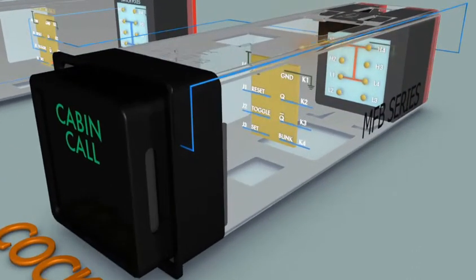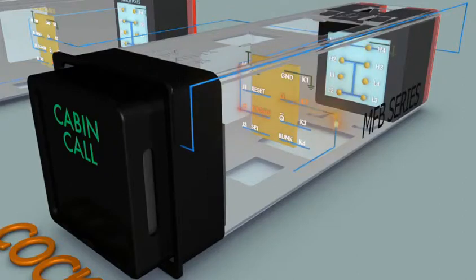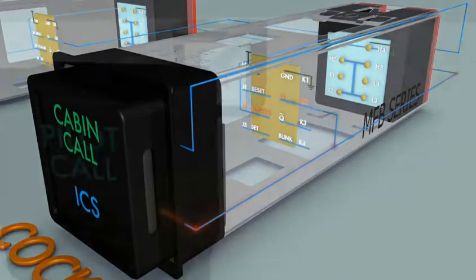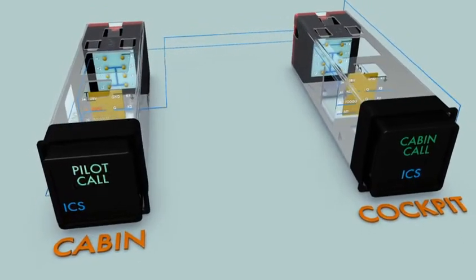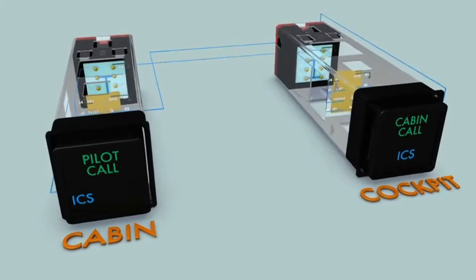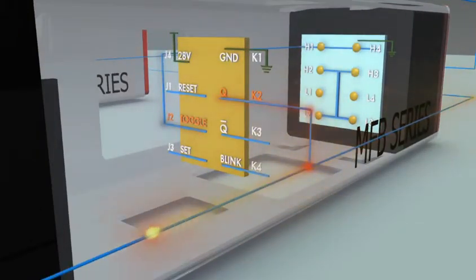When the pilot selects the cabin call switch to answer the call, the ICS channel is activated and the ICS legends in the cabin and in the cockpit illuminate. This occurs as ground is again applied through the cue output of the electronic latch.